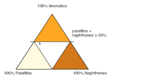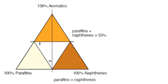You see the horizontal line with an arrow pointing downward. Below that line, the content of paraffins and naphthenes is greater than 50%. Above that line, aromatics are greater than 50%. Now, to establish the second boundary line for Group 1 paraffinic crude oils, you see the vertical line right in the middle of the triangle.